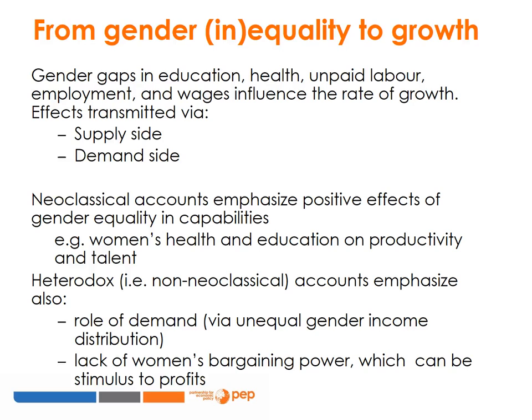Heterodox approaches differ from neoclassical growth theory in a number of ways. First, they underscore that the growth of potential output or supply must be matched by the growth of demand, itself influenced by the distribution of income. Second, they recognise that the ability to hire women at low wages — due to their weaker bargaining position relative to capitalists — can be a stimulus to investment. Moreover, in developing economies that rely on imported intermediate and capital goods to industrialise, low wages of women workers segregated in export industries can generate much-needed foreign exchange, thus releasing balance of payments constraints.